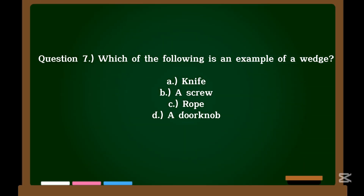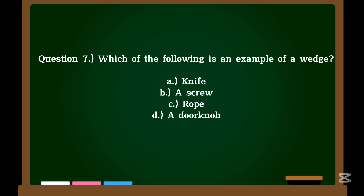Question 7. Which of the following is an example of a wedge? A. Knife. B. A screw. C. Rope. D. A doorknob. Correct answer: A. Knife.